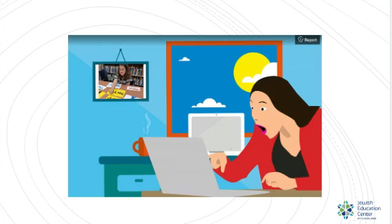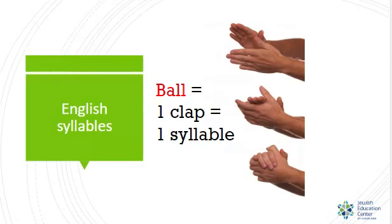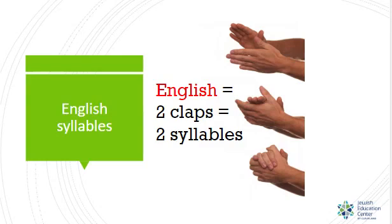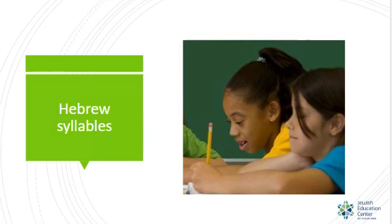All I ask is that you go with the flow on this one. When I was in elementary school, I was told the number of syllables in an English word by clapping — the number of claps indicated the number of syllables. The word 'ball' has one syllable; the word 'English' has two. But the Hebrew rules for dividing syllables do not depend on claps. The number of bounces we hear in a word is not how we determine syllables. Instead, we count the number of vowel signs.